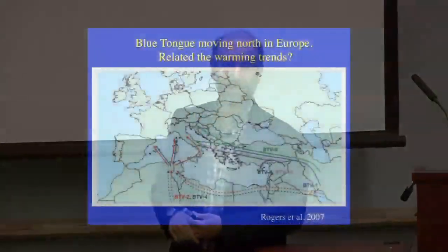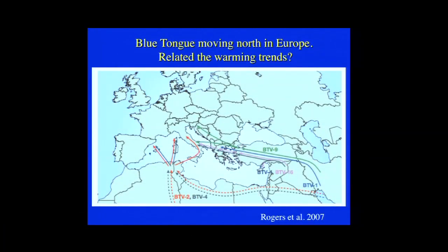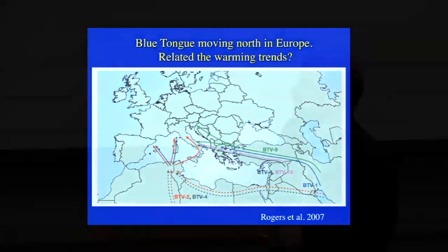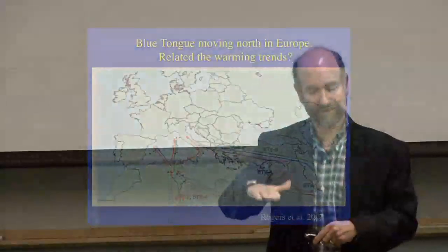There are documented cases in domestic animals. Dr. David Rogers from Oxford University mapped different strains of bluetongue virus moving northward in Europe, and after looking at time series of temperatures and various confounding factors, concluded there was a probable climate influence — gradual warming pushing this disease northward into northern Europe.